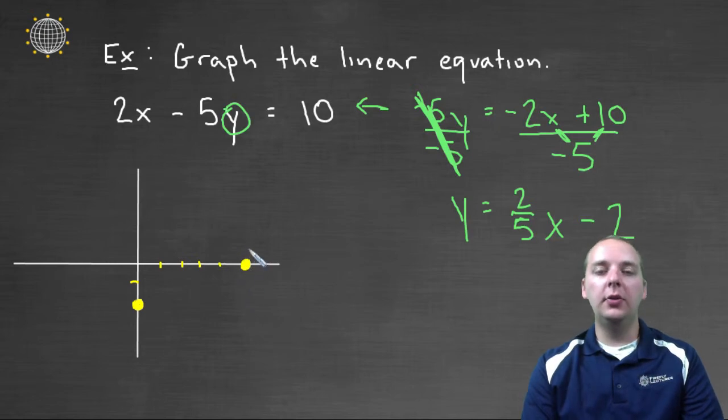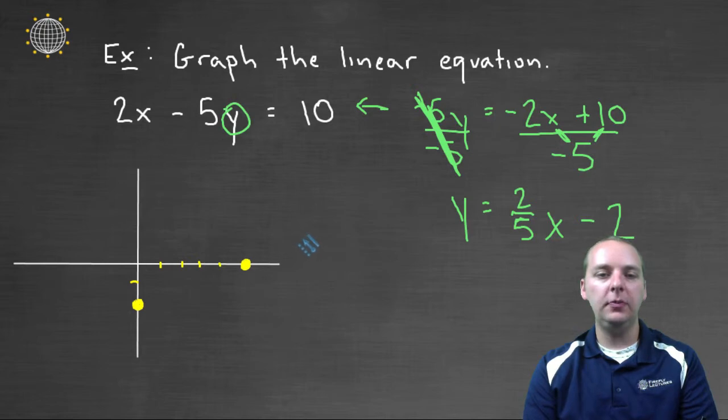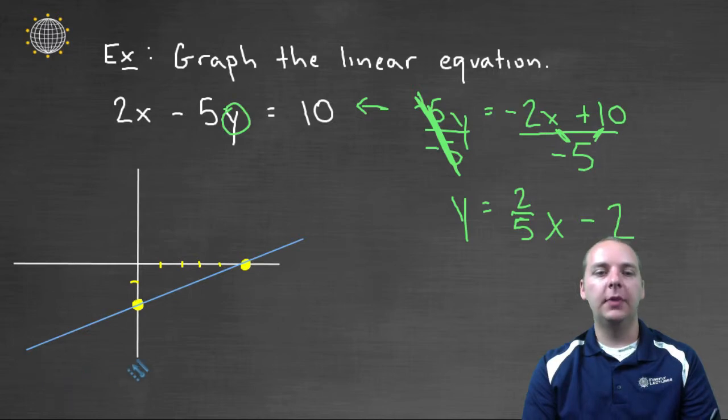And if you wanted to, you could go up two more, five right more, up two more, five right more, etcetera, etcetera. I'm kind of running out of space, so I think I'll just use these two points. And the graph will look something kind of like this. This is the graph that goes between these two points right here. So this is a graph that represents this particular linear equation that we have right here.